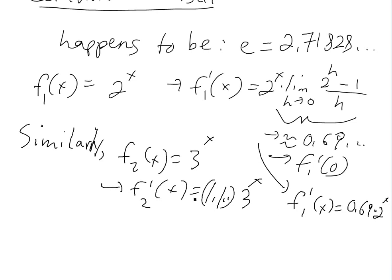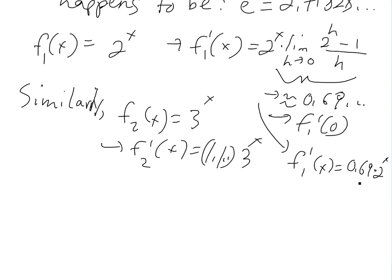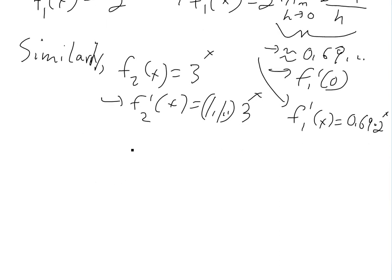So if you see this, this one is 1.1, this is 0.69, so basically the graphs will be between, so e to the x is between 2 to the x and 3 to the x.